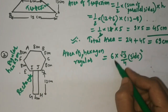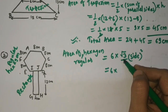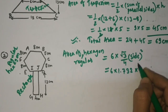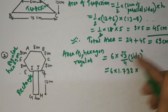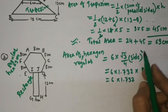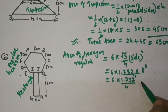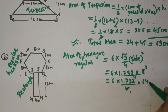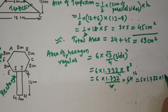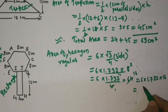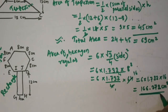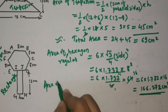Since √3 ≈ 1.732, we calculate 6 × 1.732 × 16 (since 64/4 = 16). This gives 6 × 1.732 × 16 = 166.272 cm². Now for the area of the rectangle: length × breadth = 2 × (length) × 4. Wait — the length is given as 2l and height is 4, so area = 48 cm².